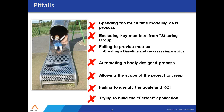Automating a badly designed process is another key problem — if it's poorly designed and you put it in place, it's going to automate poorly as well. You have to look at the process and make sure it's as efficient as possible. Scope creep — we all know about that one. Failing to identify goals and ROI: put it in the business's terms, get them to agree where they're at and what they want to be — this is how you're going to have great success that everybody applauds.